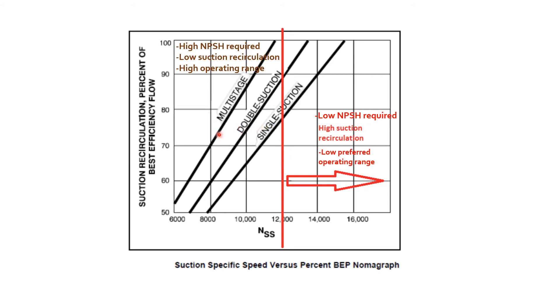If we have a pump with NSS less than 12,000, what happens? The disadvantage is that NPSHR shall be high, as we talked about the inverse relationship. The advantage is that there will be low suction recirculation for the low NSS number. Third, the operating range for the pump will be high.